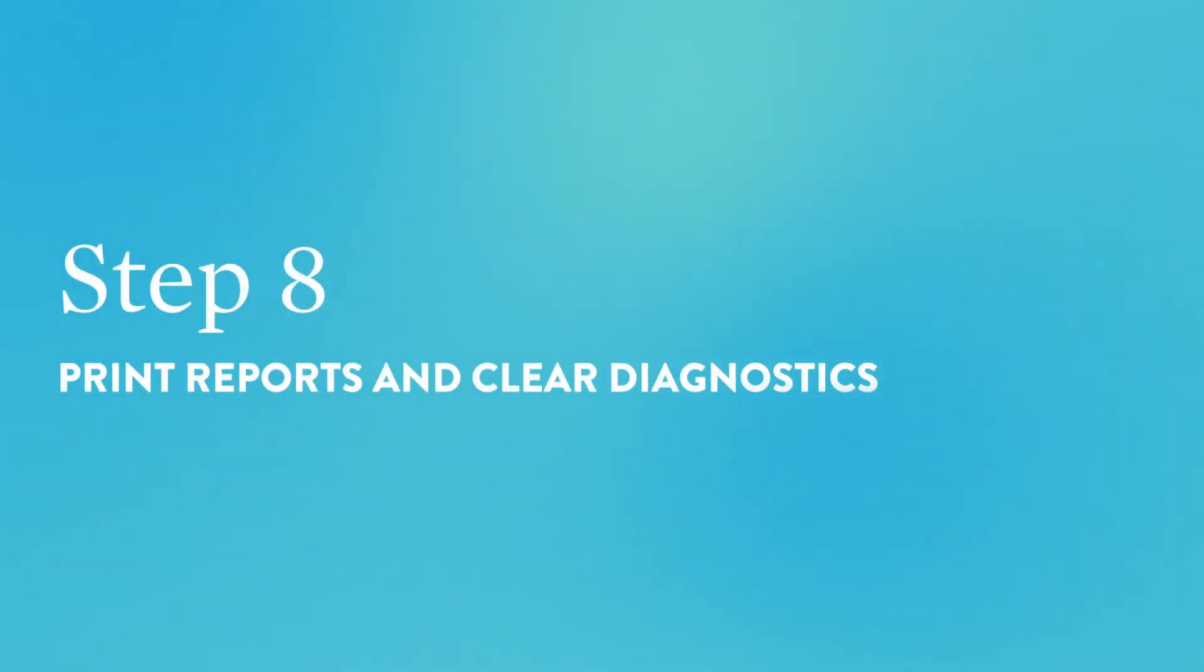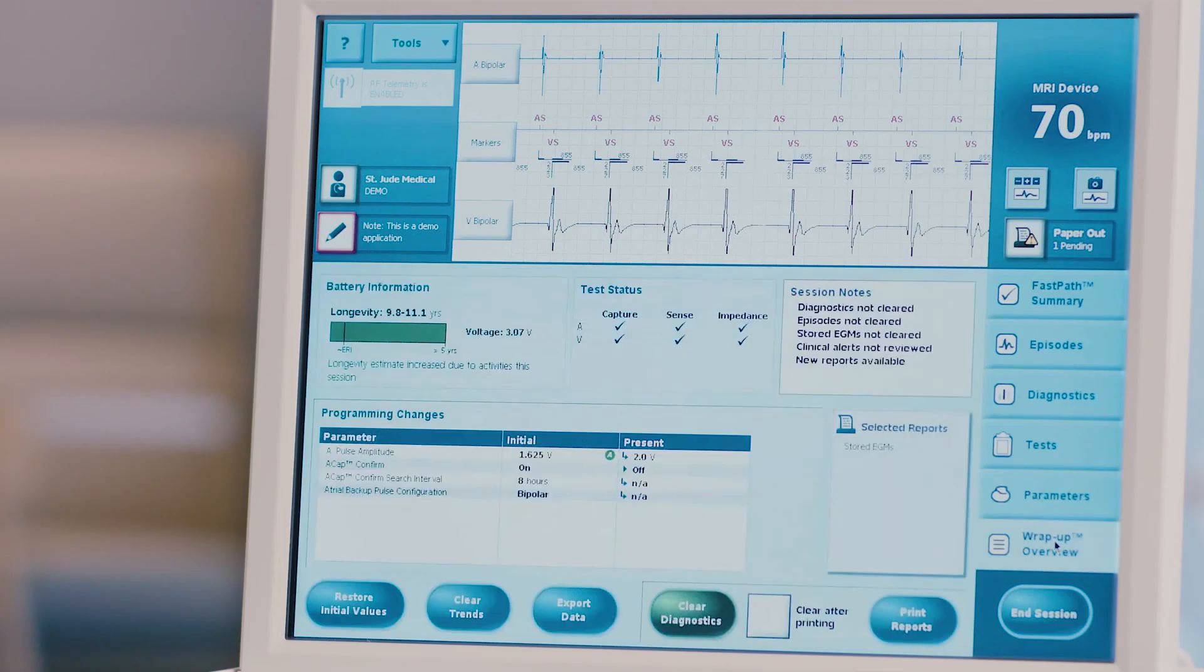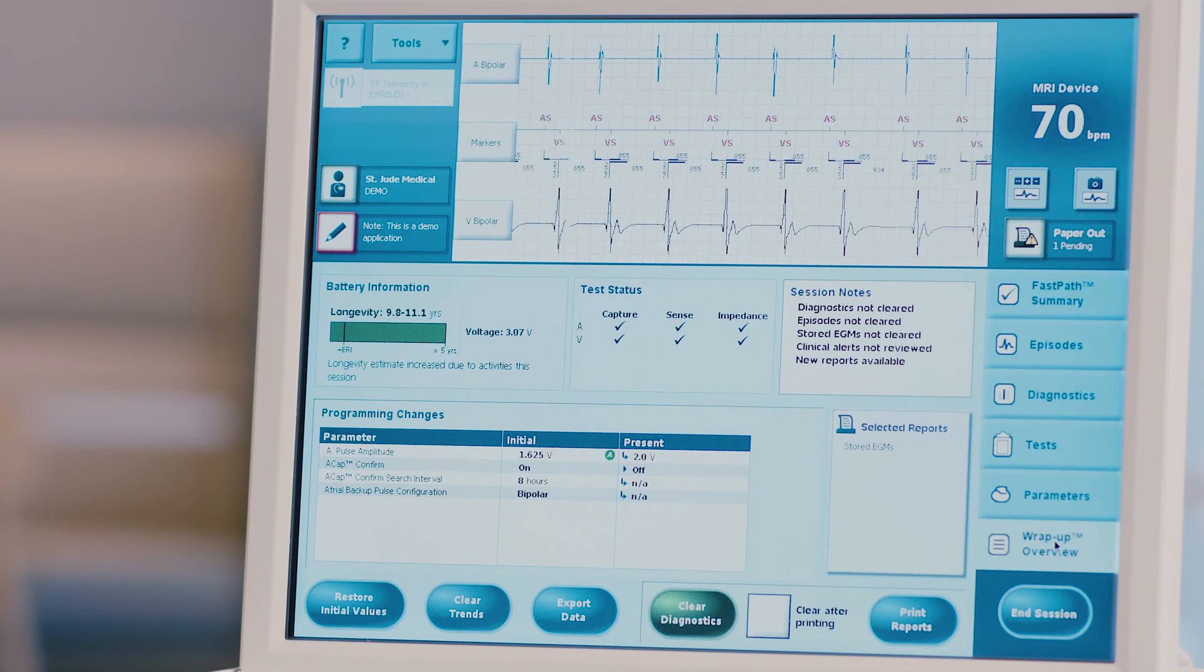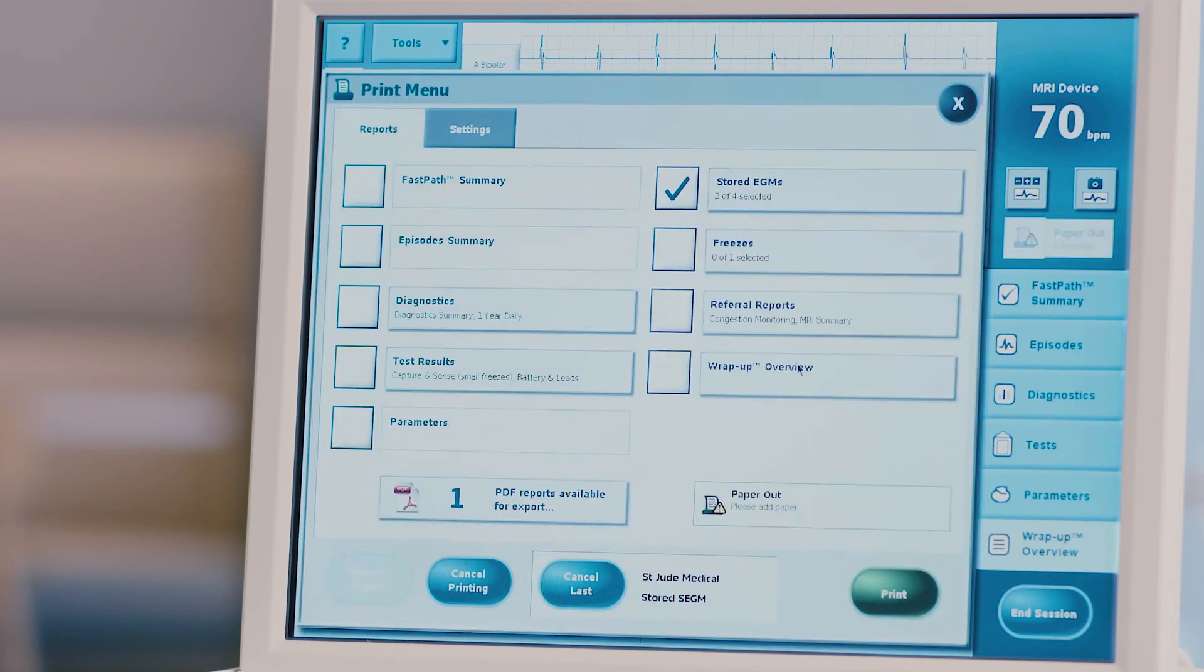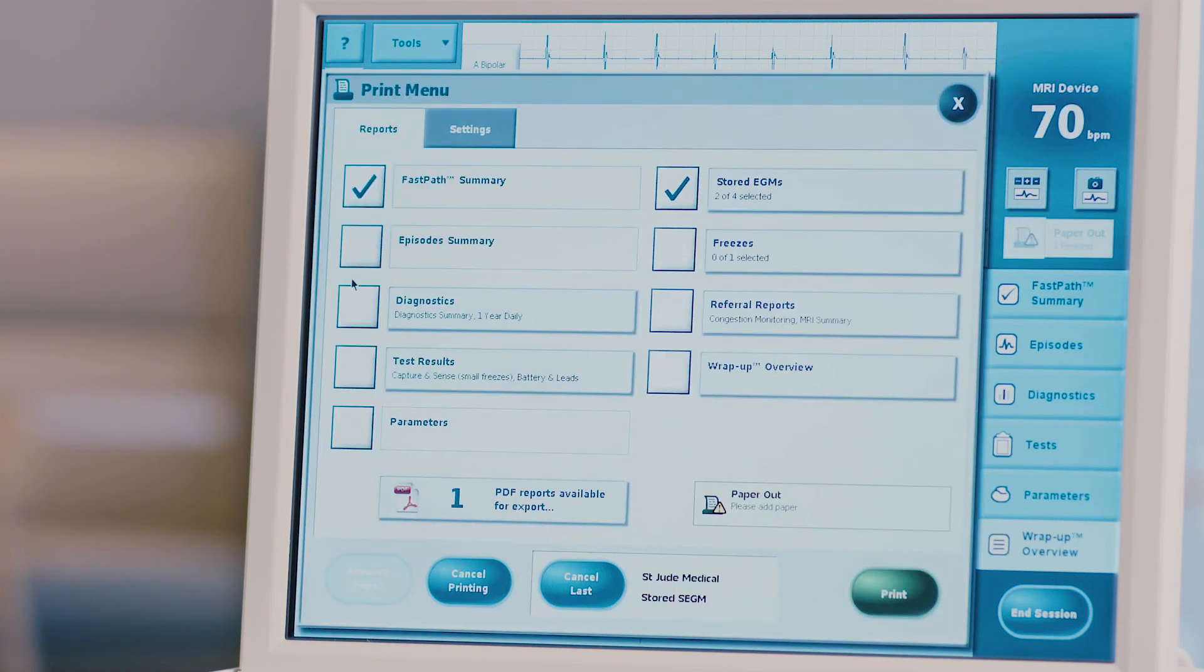Step 8: Print reports and clear diagnostics. Press the wrap-up overview tab on the right hand side of the screen. Note the box labeled programming changes made this session. If you did not intend to make any permanent programming changes, be sure this box is empty. Press selected reports to choose which reports you would like to print. Note that any episodes selected for printing earlier will be automatically selected here. Press the green print button to print reports.